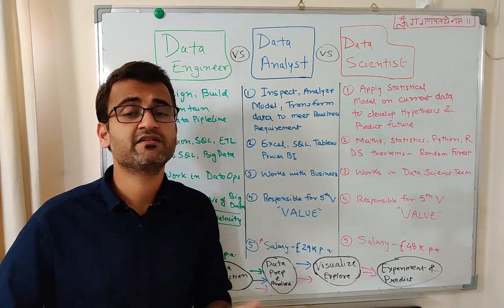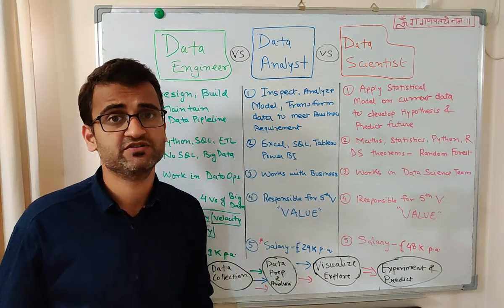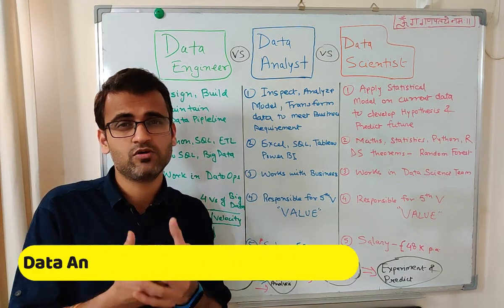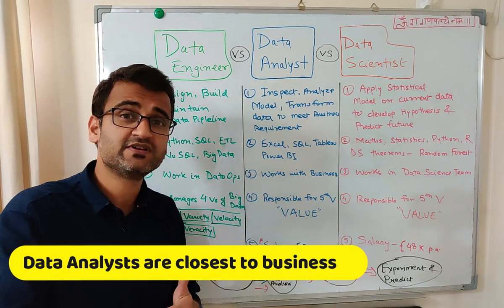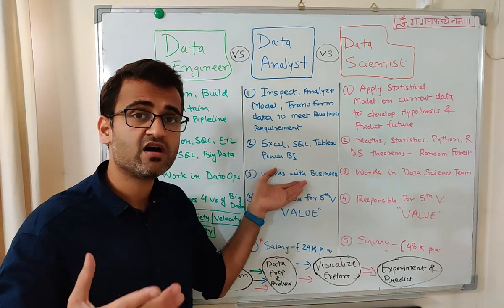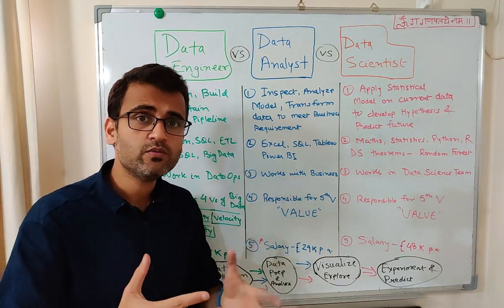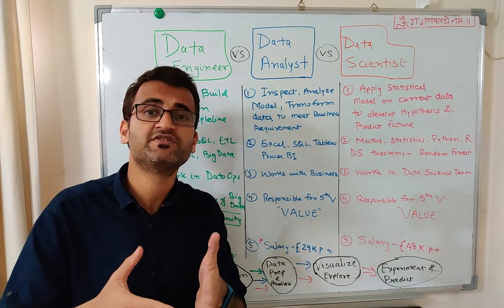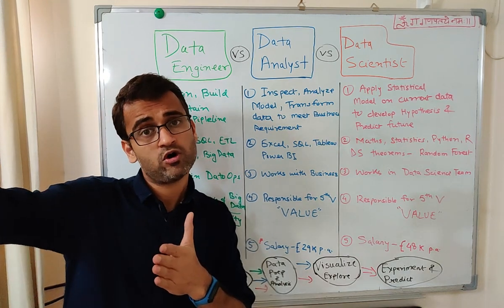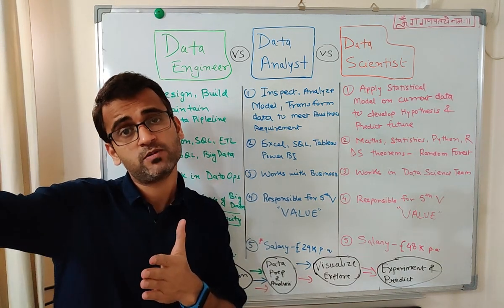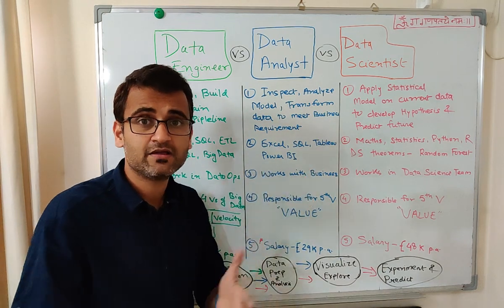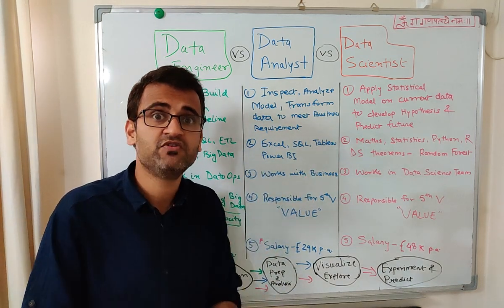Data analysts often sit close to the business — business analysts and data analysts are closely tied together, and sometimes a business analyst transforms into a data analyst. They work on fixing immediate business problems. Data scientists, on the other hand, work on models that predict and fix future problems — their work is not as immediate in nature.